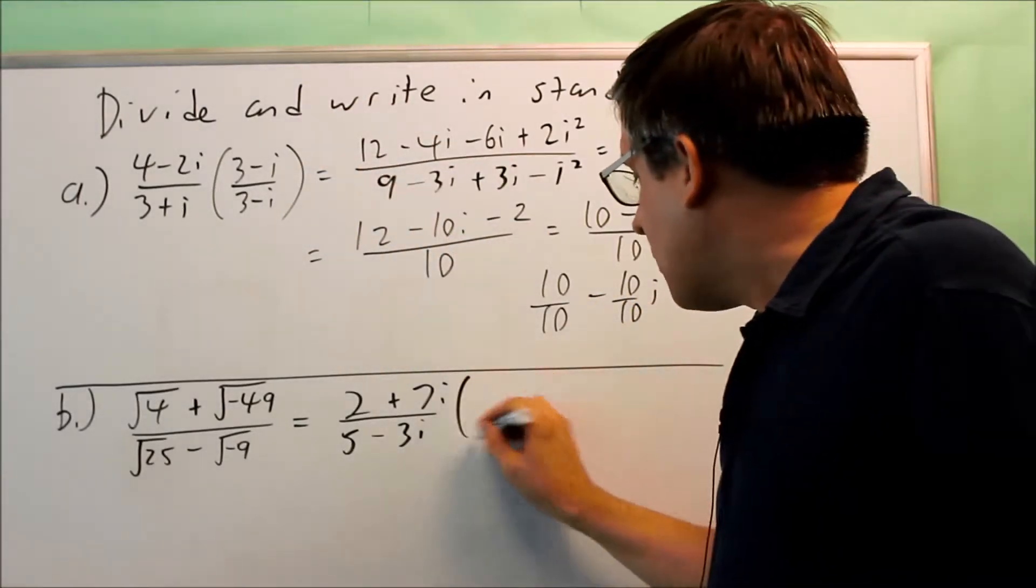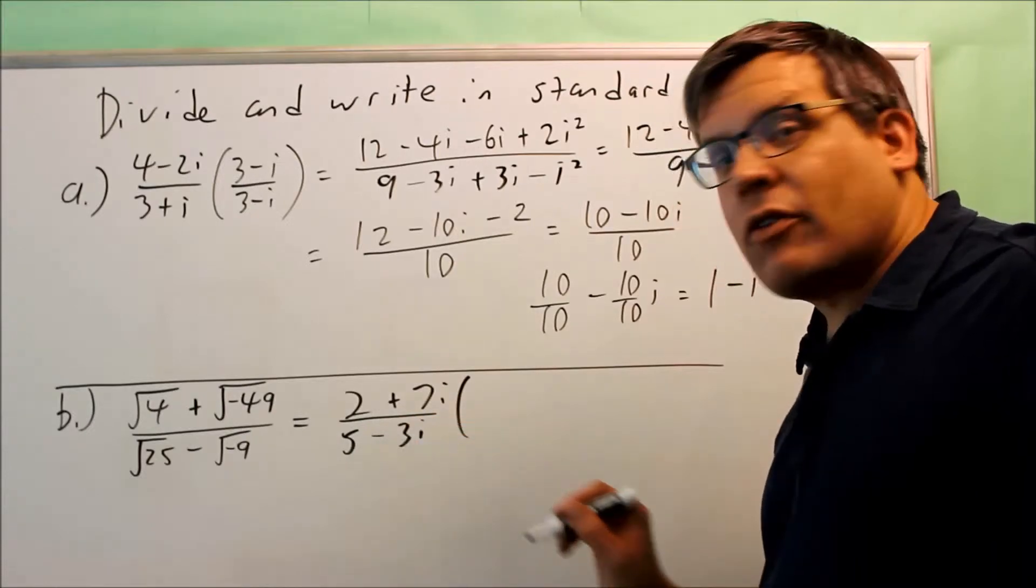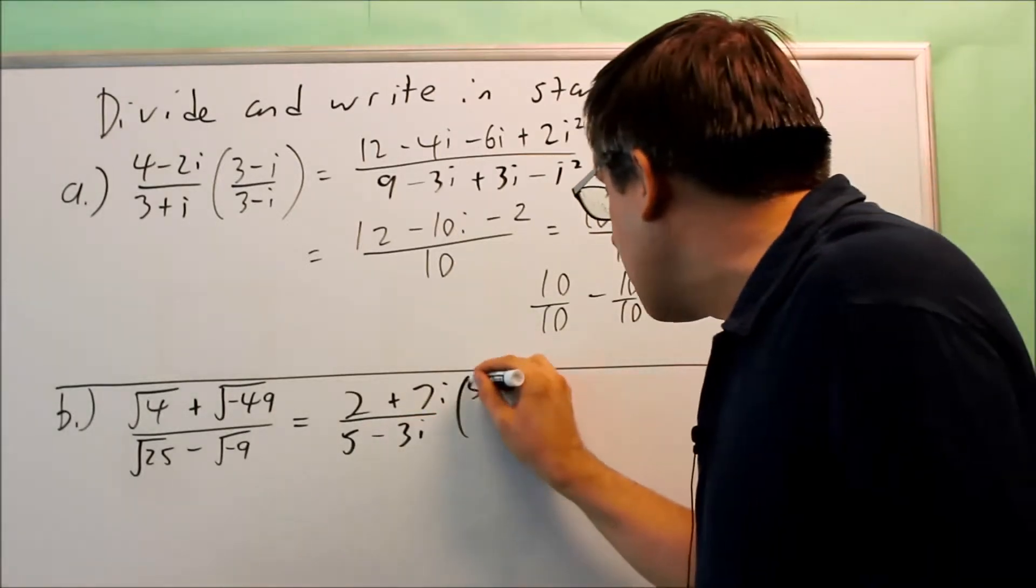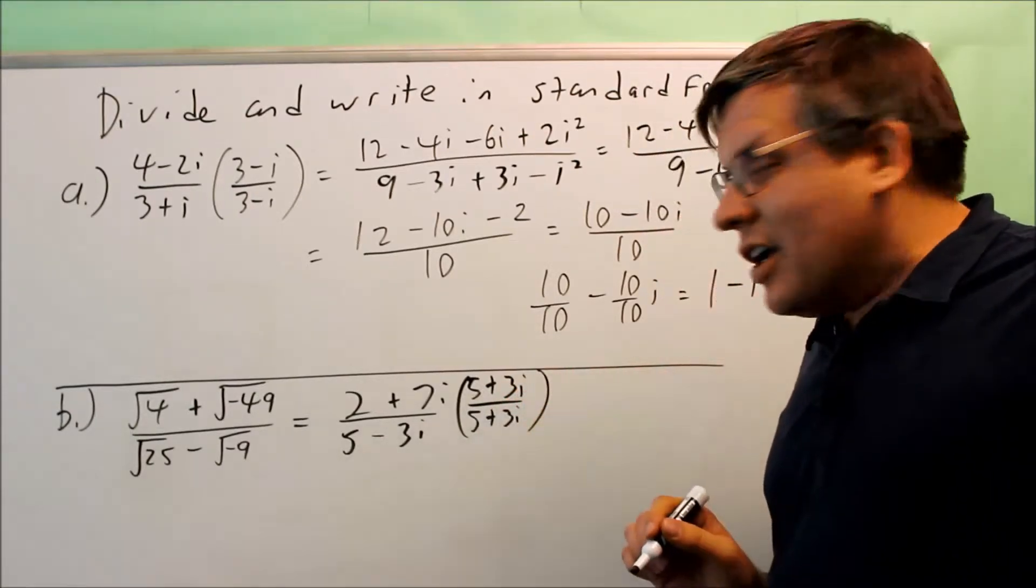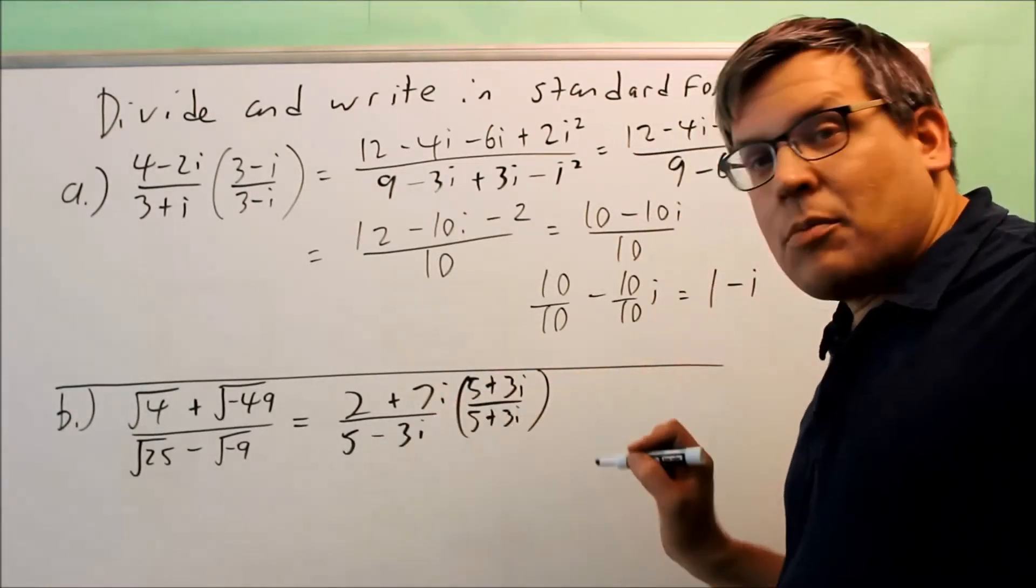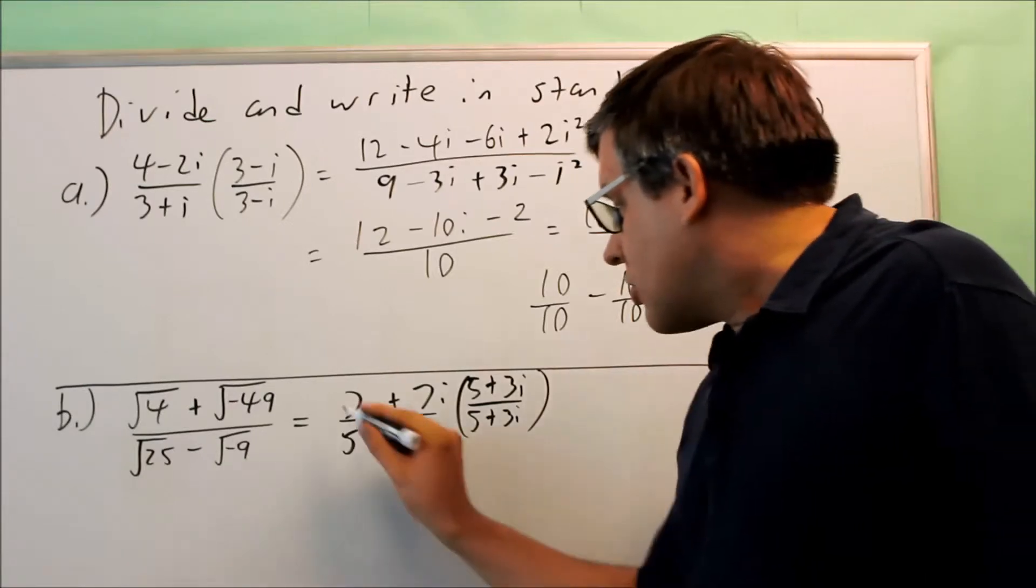So you want to multiply top and bottom by the opposite sign of what you have in the bottom here. So it's a minus, you want to do plus. So 5 plus 3i, you'll do that top and bottom. And again, you're going to multiply across the top, multiply across the bottom.